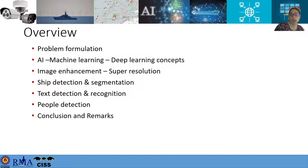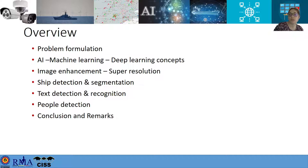The presentation outline: I will start with the description of the problem formulation and research strategy, then some insights on artificial intelligence, machine learning, and deep learning concepts. Next, super resolution, ship detection and segmentation, text detection and recognition, and people detection tasks are discussed in the maritime context. Then we will have results obtained with selected models, the conclusions, and some remarks.